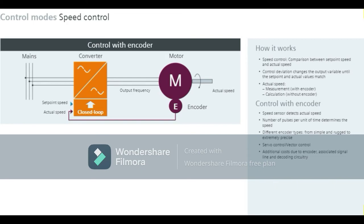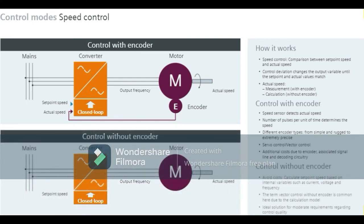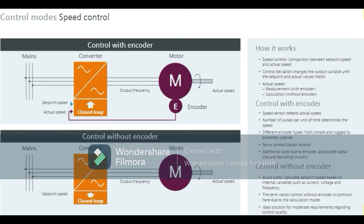These costs can be avoided by calculating the actual speed using internal variables such as current, voltage, and frequency. The term 'vector control without encoder' is common here. Due to the calculation model, this is often the best solution for moderate requirements regarding control quality.